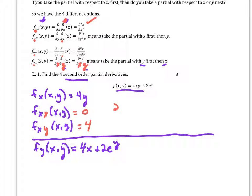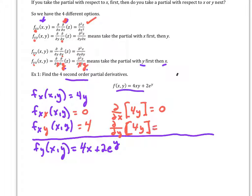In the other partial derivative notation, this one — taking the partial with respect to x of 4y — equals zero. And this one, taking the partial with respect to y of 4y, gives four. So that's all we're going to be doing here.